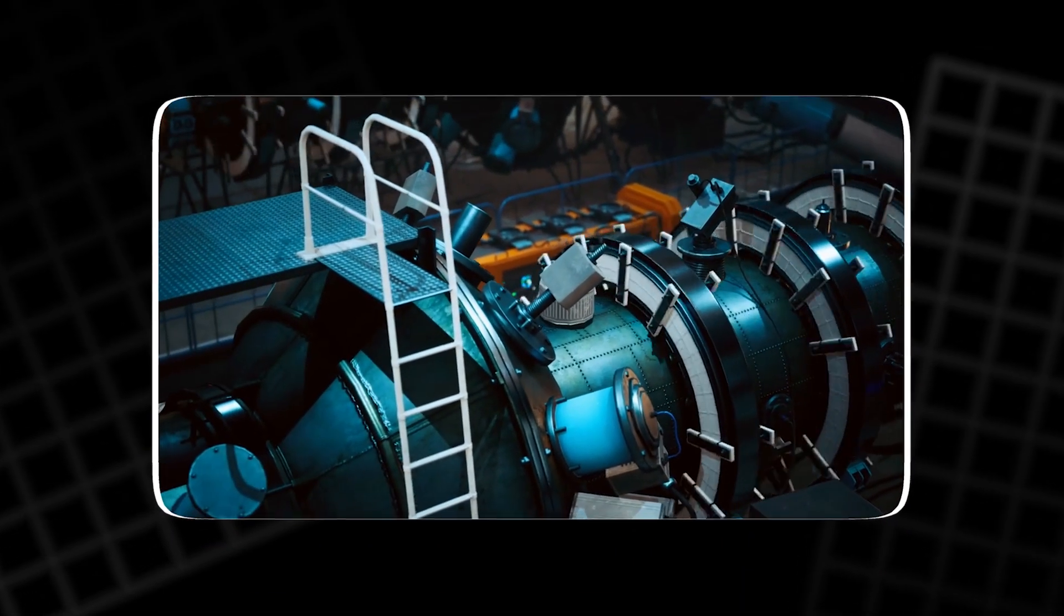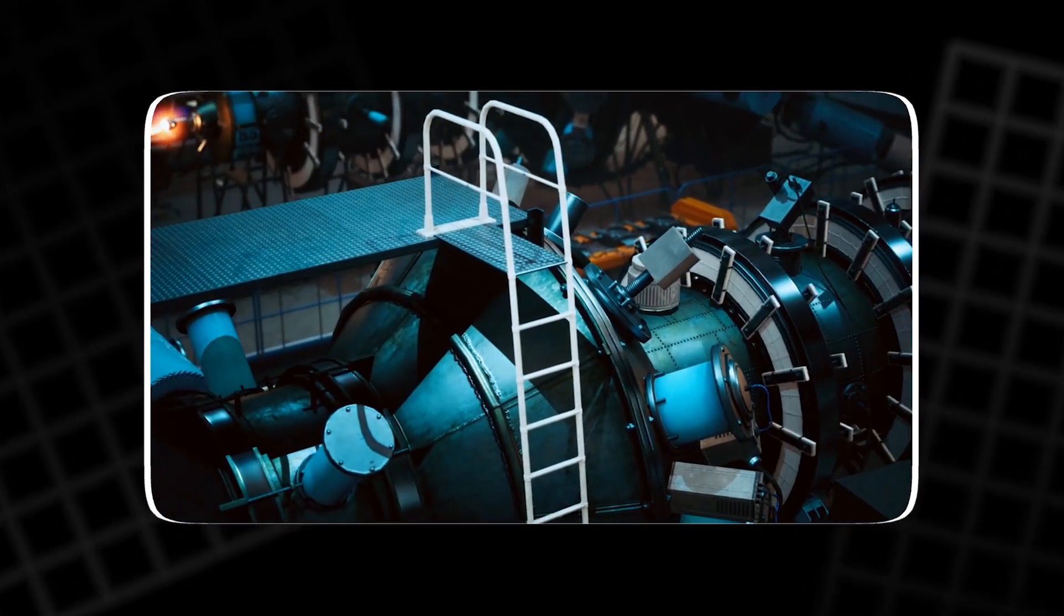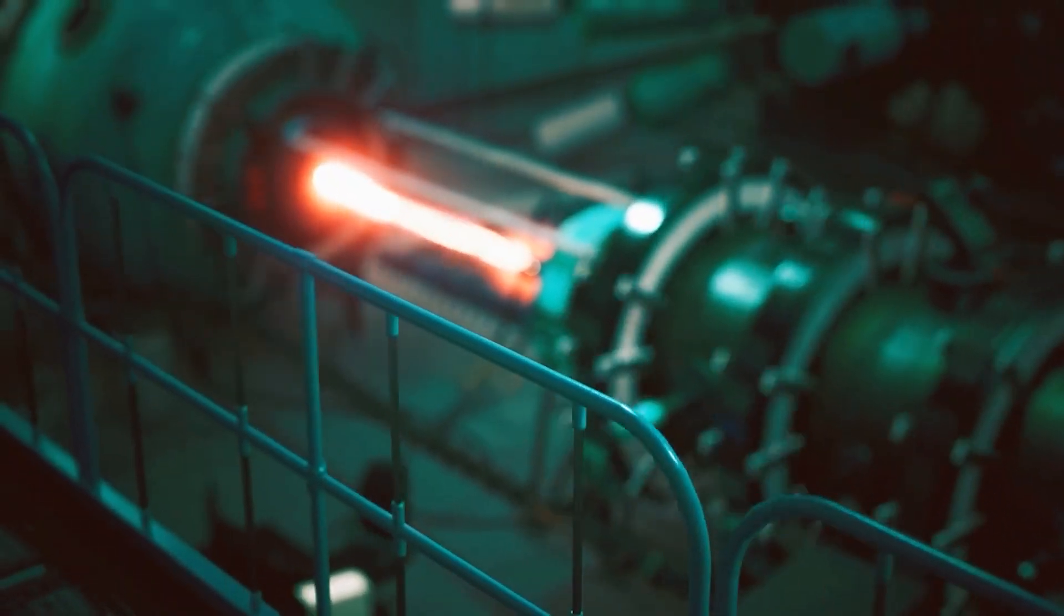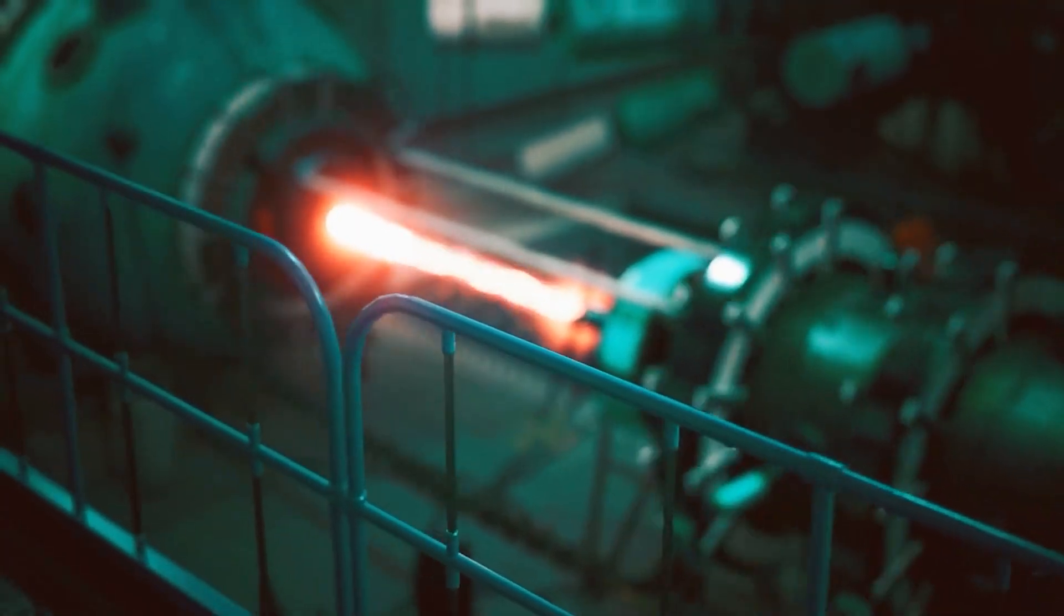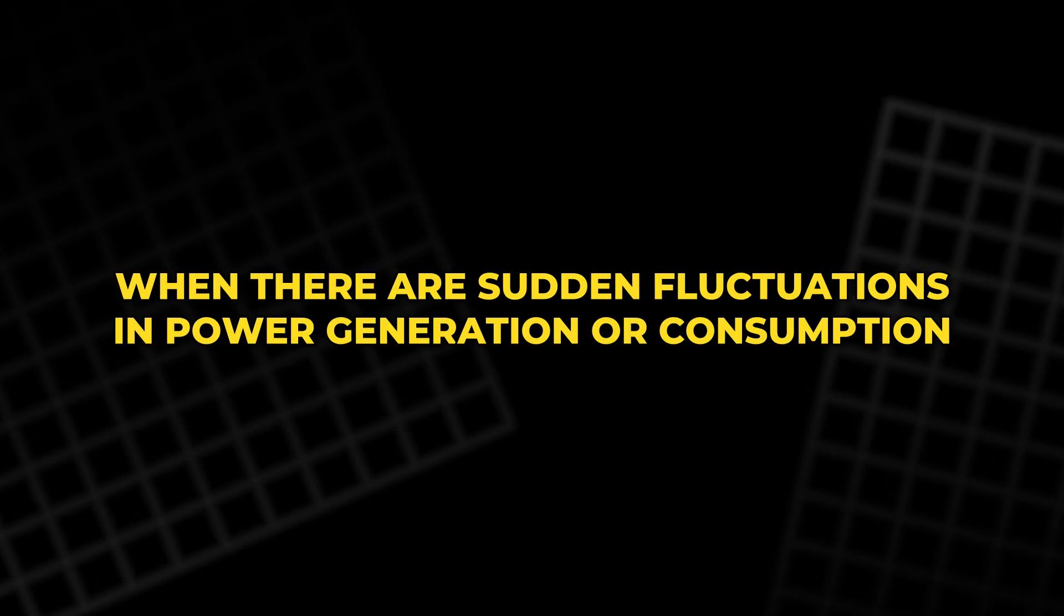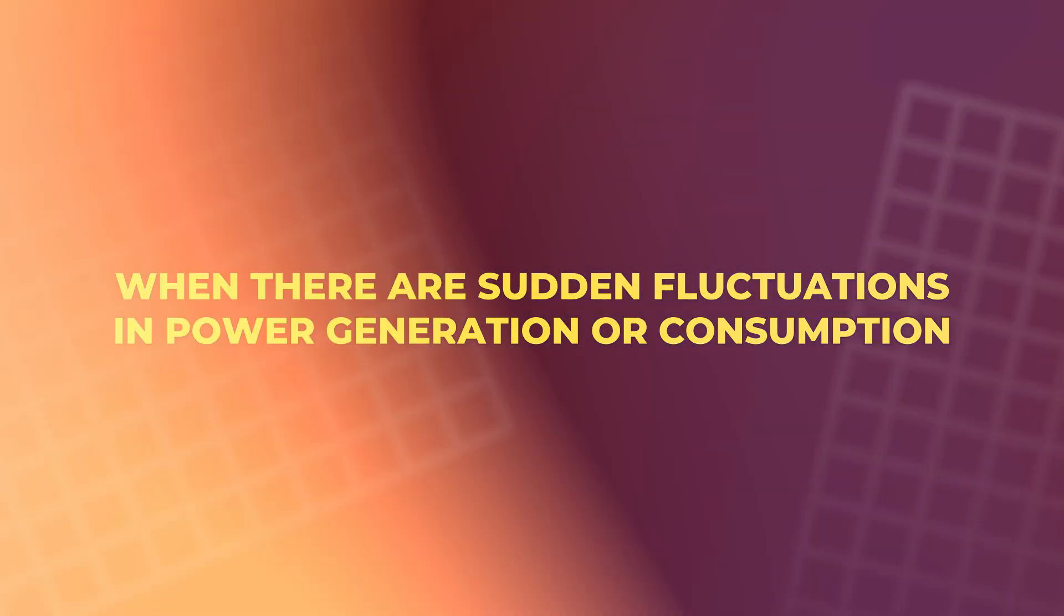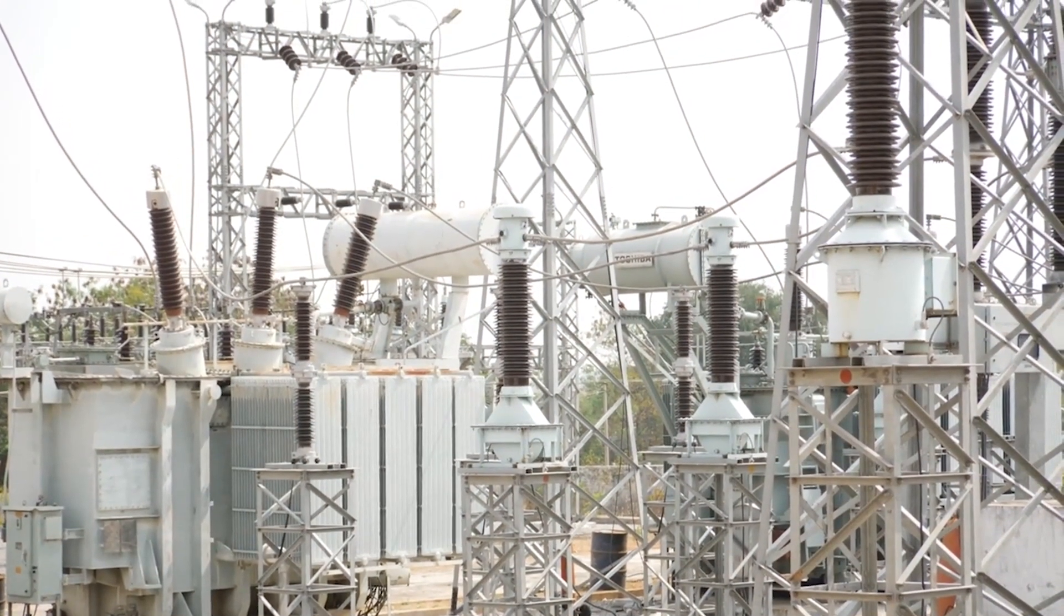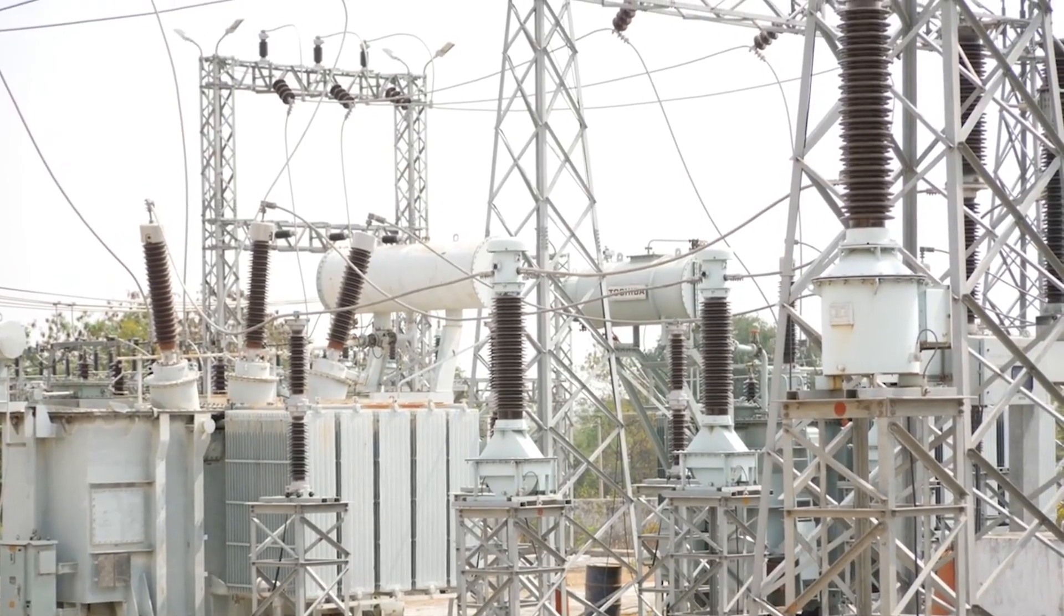These plants have large, spinning generators that offer physical inertia. The inertia provided by these massive spinning generators helps stabilize the grid when there are sudden fluctuations in power generation or consumption.